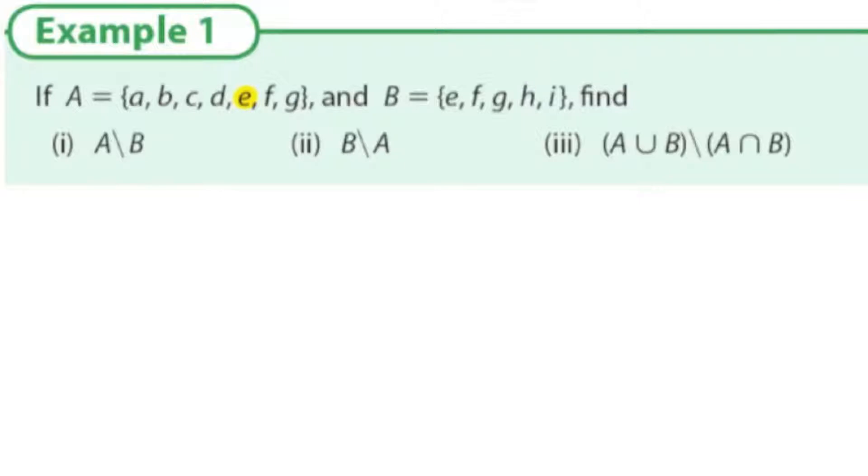Okay, let's highlight the things that are in both sets. We see e, f, and g, I'm shading them in here in yellow, are in both sets. A, b, c, and d are only in A and h and i are only in B.